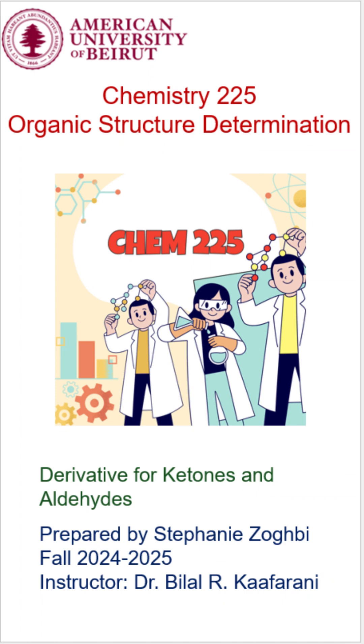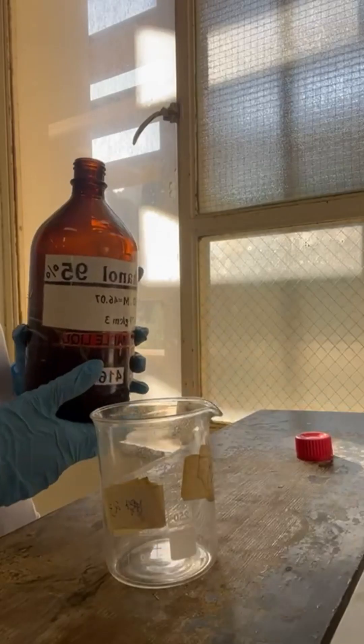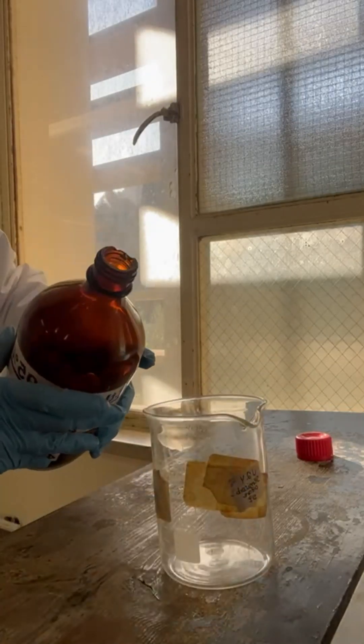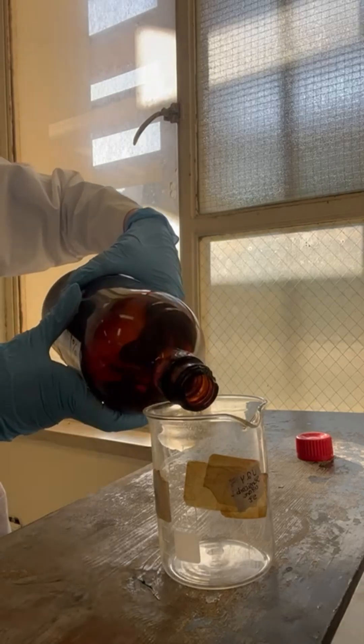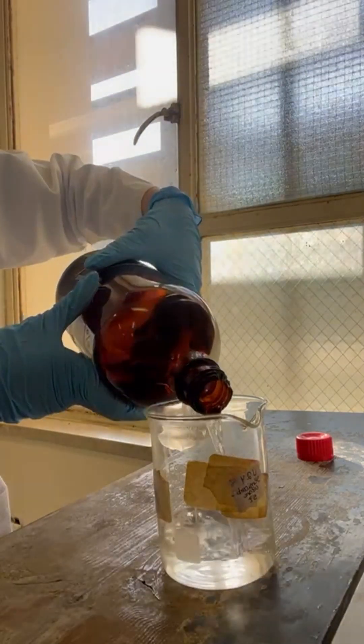Hi everyone, this is Stephanie Zoghbi and I will be showing you how to make a derivative for ketones and aldehydes using Procedure 13: 2,4-dinitrophenyl hydrazones of aldehydes and ketones, which is in the Shriner book. Firstly, I take around 50 milliliters of ethanol and pour it into a beaker.